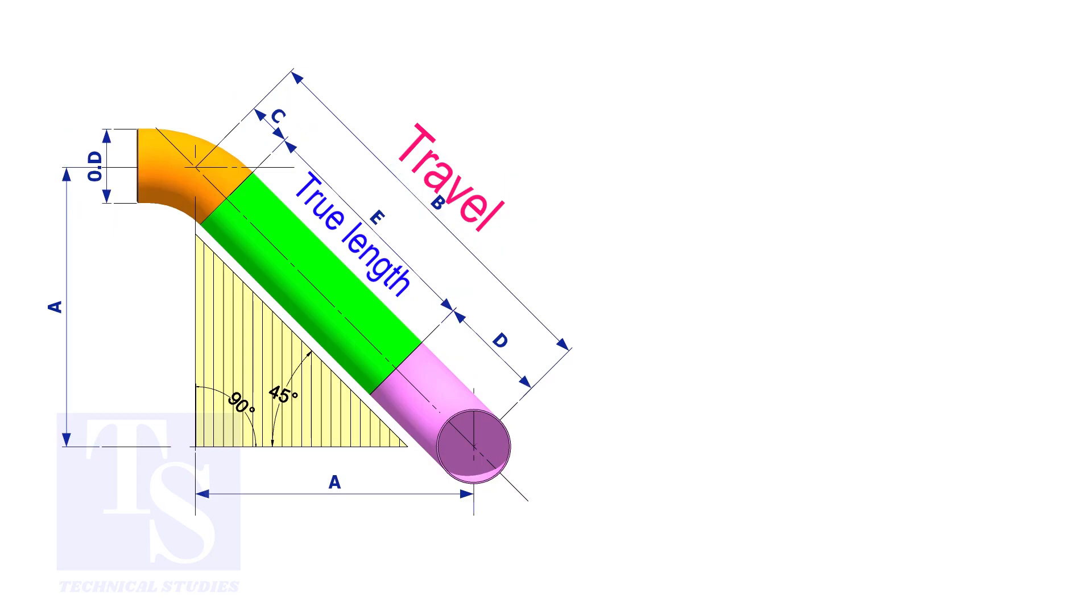Assume that the elbows are short radius. Nominal pipe size is 4 inch. The travel length is 1500 millimeters. The joint gap is 3 millimeters. Calculate the true length of the spool.